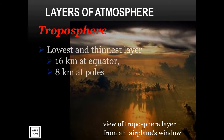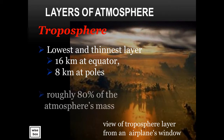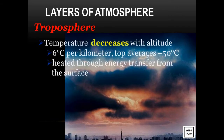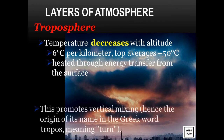Troposphere. It is the lowest and thinnest layer — 16 kilometers at the equator, 8 kilometers at the poles. It is roughly 80% of the atmosphere's mass. The temperature decreases with altitude at 6 degrees Celsius per kilometer, with the top average at minus 50 degrees Celsius. It is heated through energy transfer from the surface, which promotes vertical mixing. Hence the origin of its name in the Greek word tropos, meaning turn.